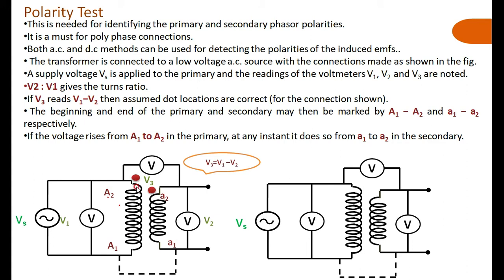The higher potential is always marked with A2 and the lower potential is always marked with A1. Whatever the polarity position, the highest potential terminal is marked A2 and the lowest is A1. At the primary, A2 has higher potential than A1; at the same time, on the secondary, A2 also has higher potential than A1.